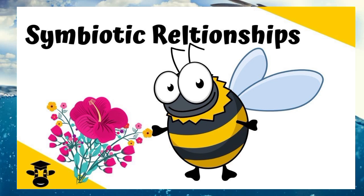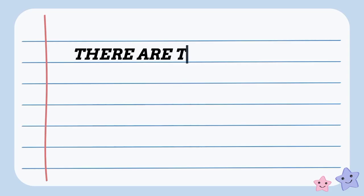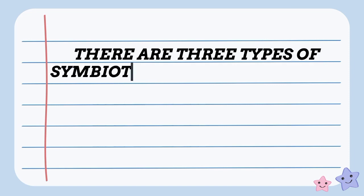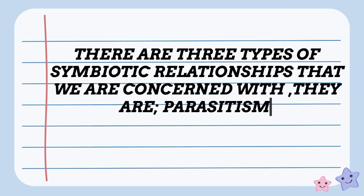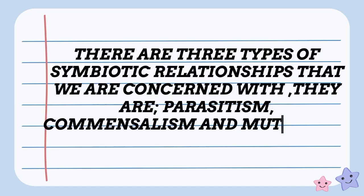We will now be looking at symbiotic relationships. A symbiotic relationship is any close relationship between two organisms of different species. There are three types of symbiotic relationships that we are concerned with. They are parasitism, commensalism, and mutualism.